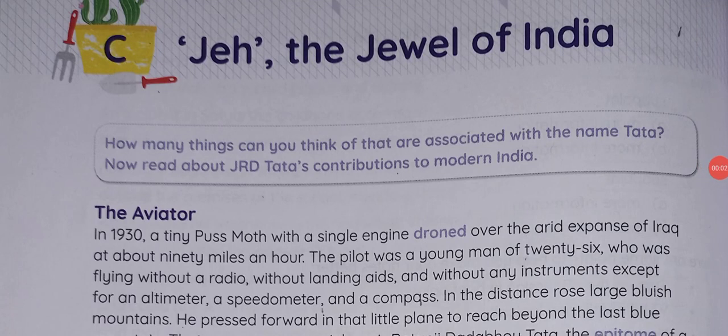Good morning children. Today we are going to start our next topic — Unit 5, Section C: 'J: The Jewel of India.' Before starting the chapter, we just have to understand what the chapter is about. As the name suggests, 'the jewel of India' means a person who is like a jewel for the country — someone who is very important.